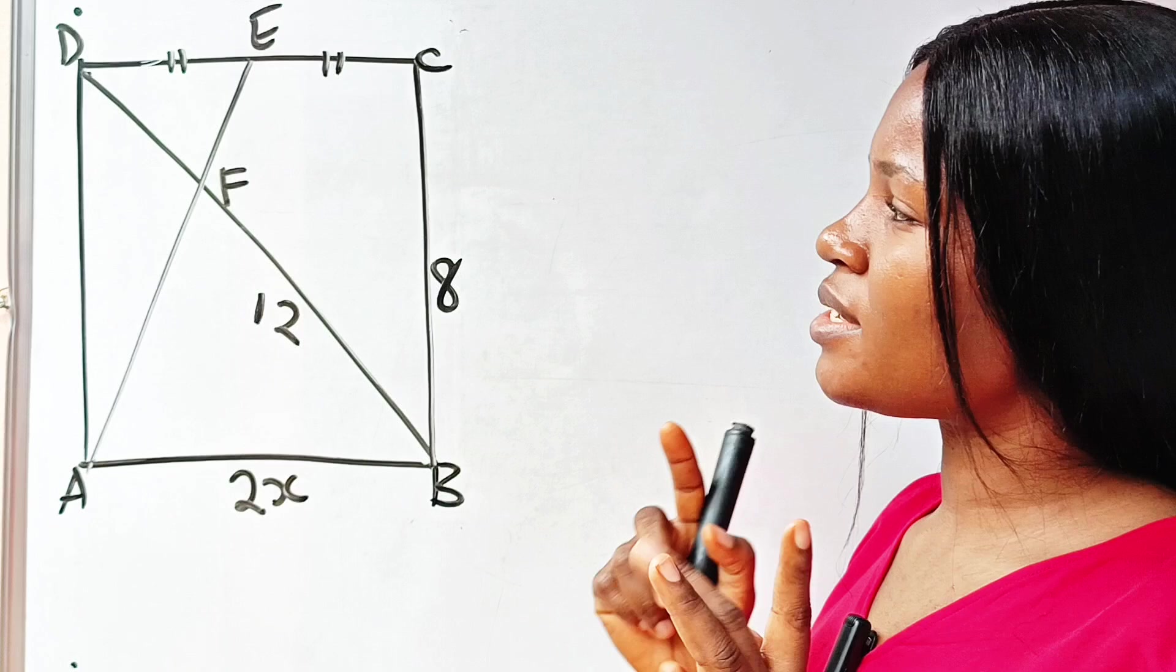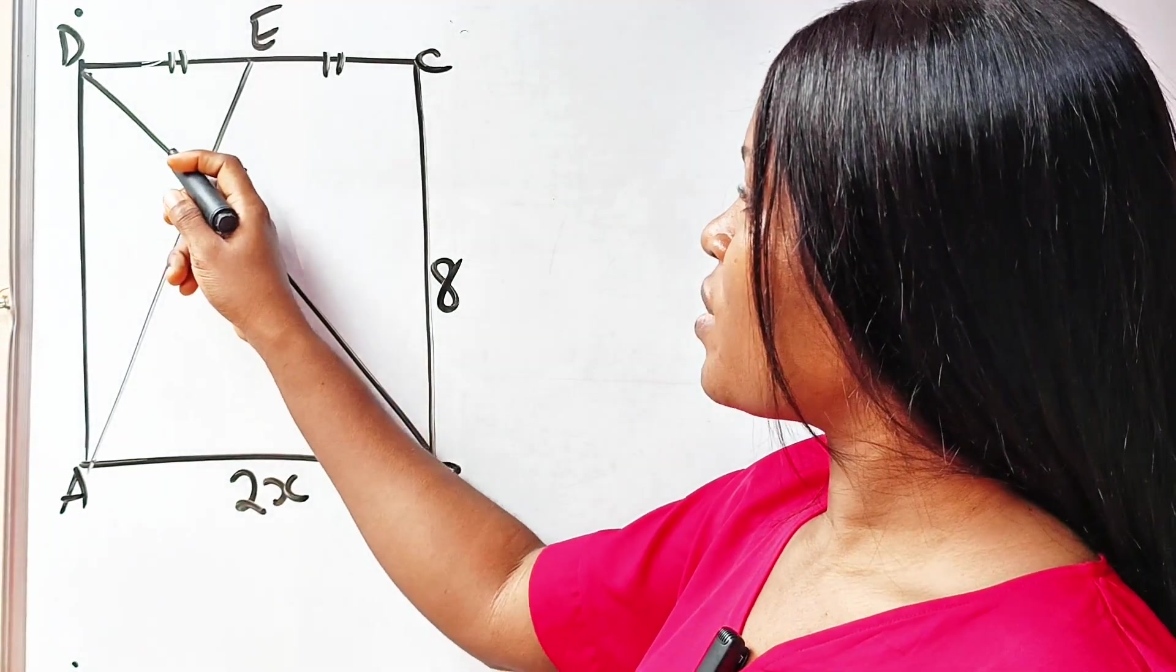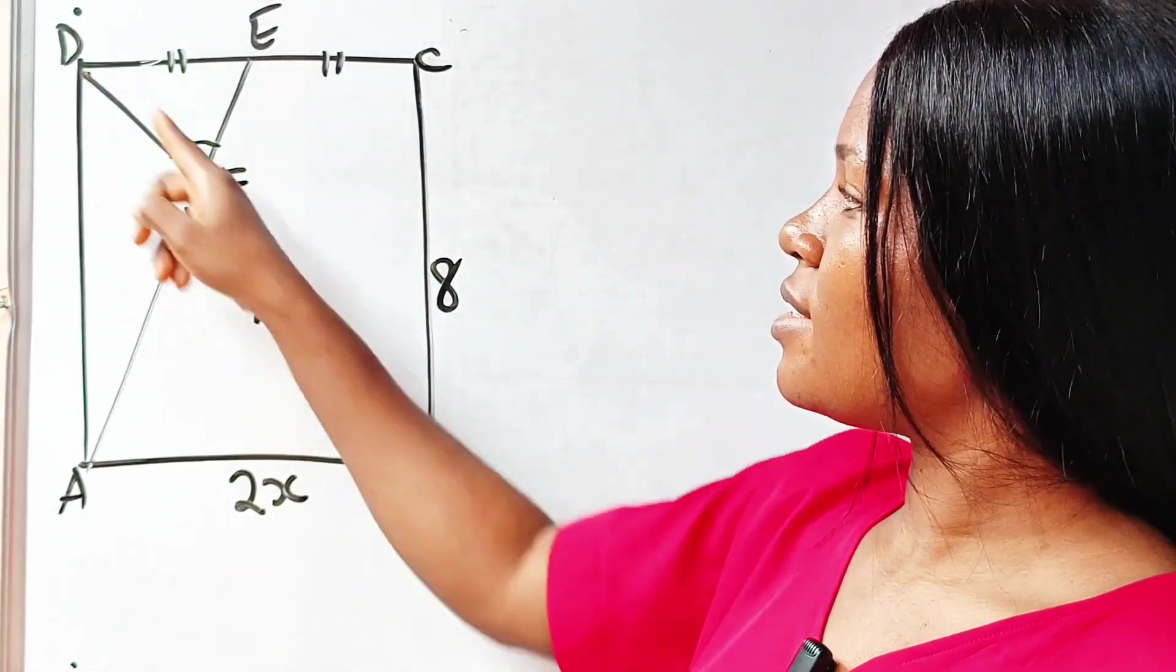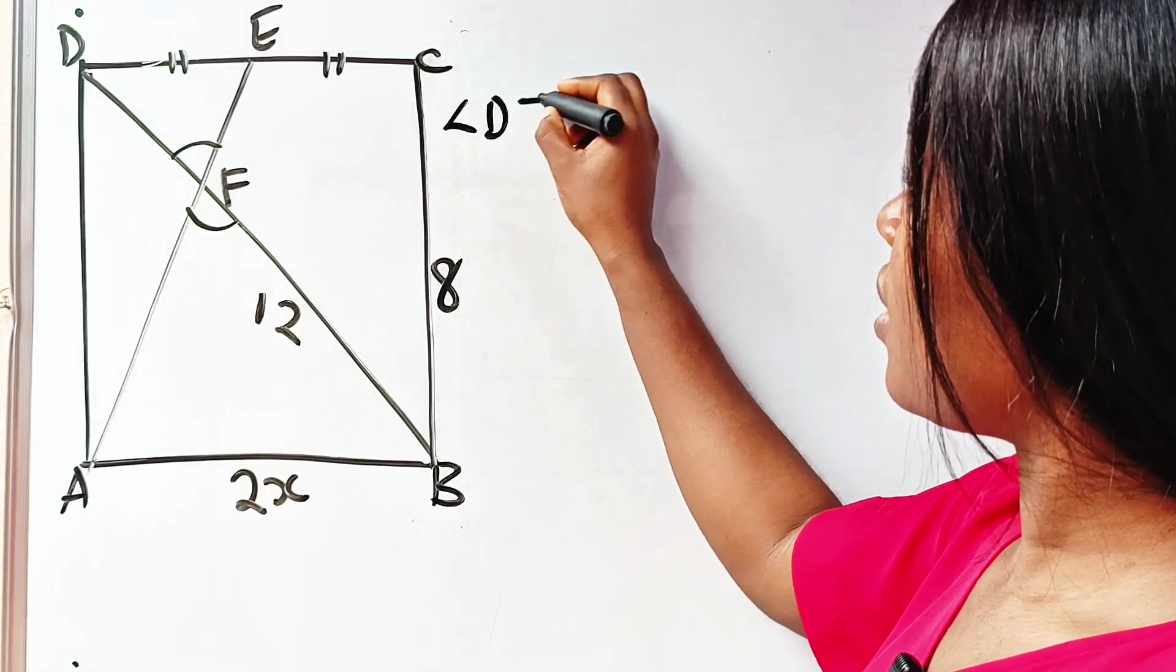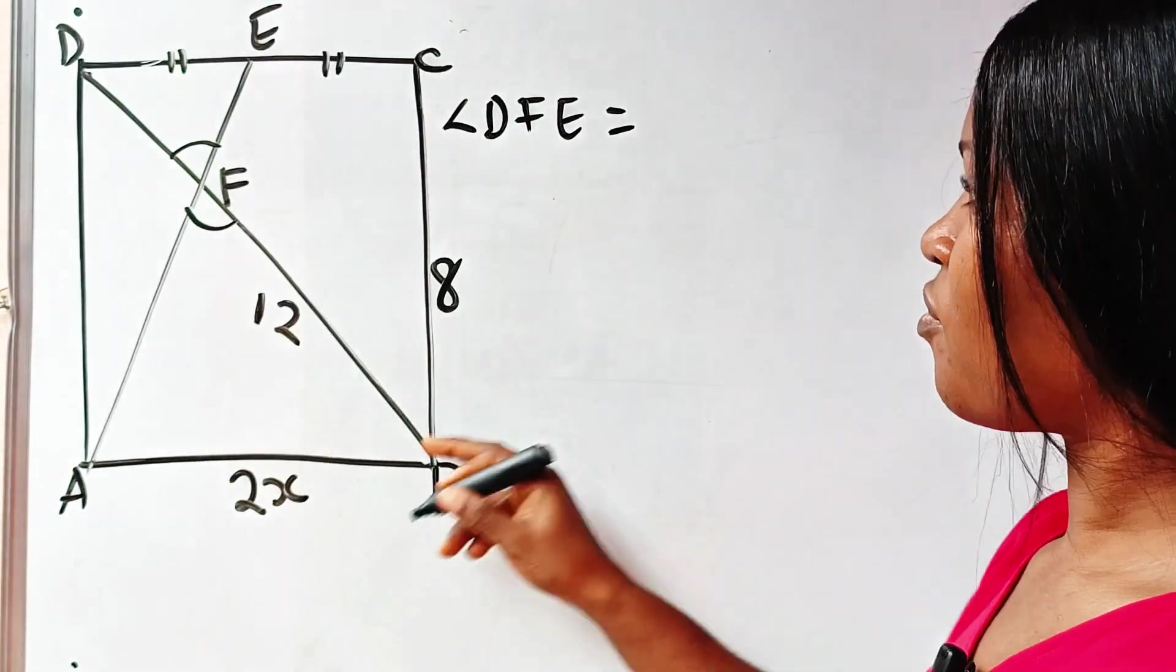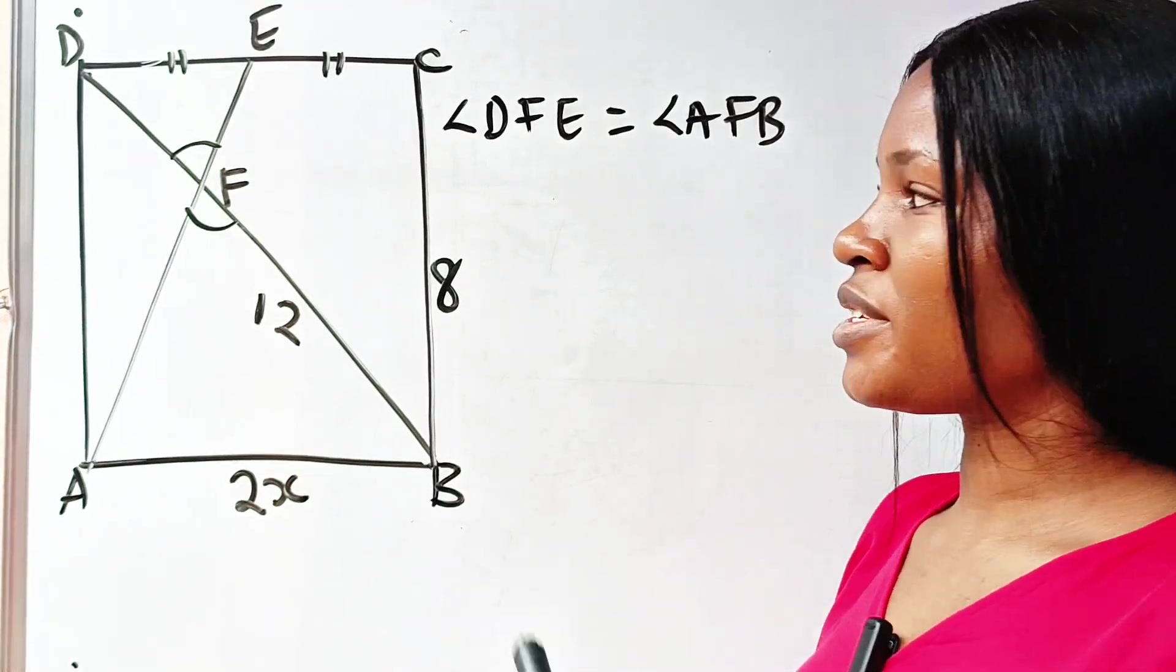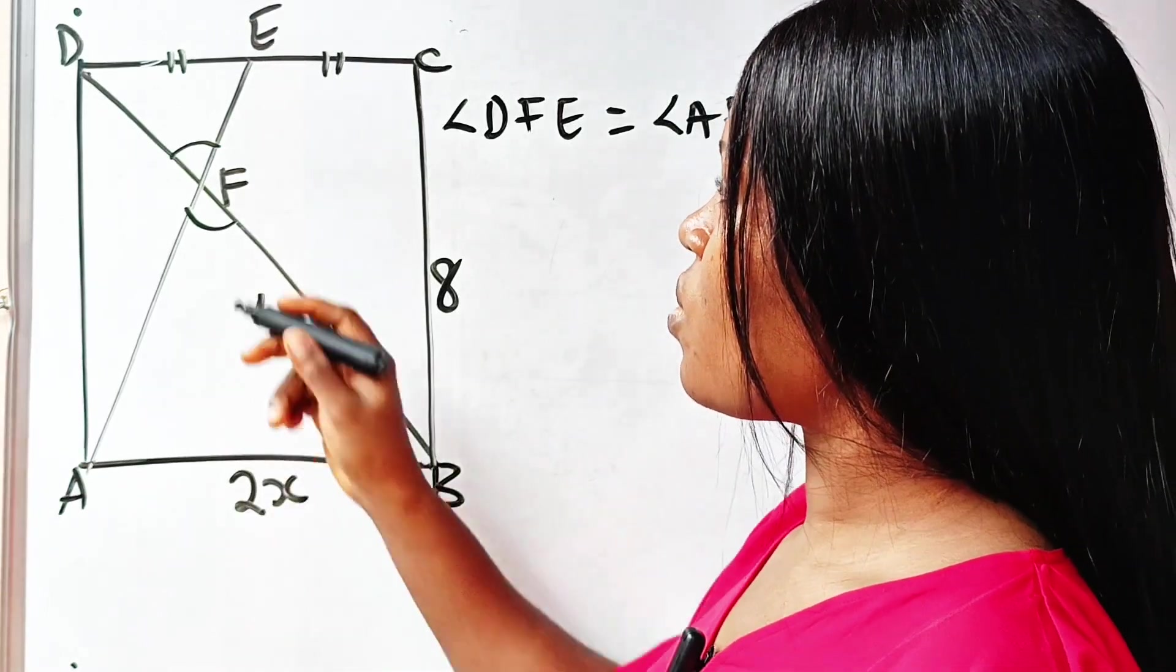The first thing we need to recognize here is that vertically opposite angles are equal. So it means that at this point F, angle DFE—so it means that triangle DFE is equal to angle AFB. The reason is vertically opposite angles are equal.